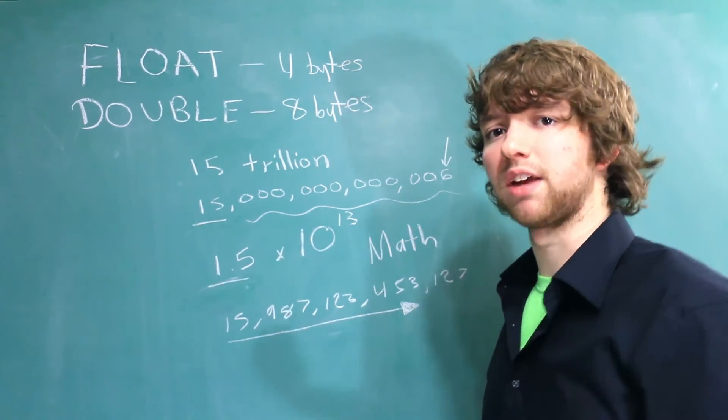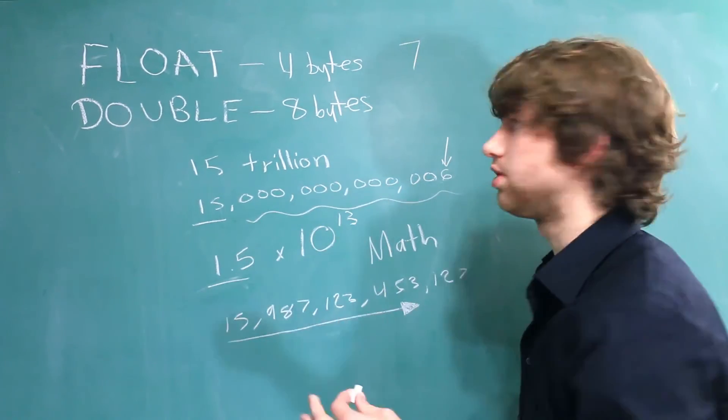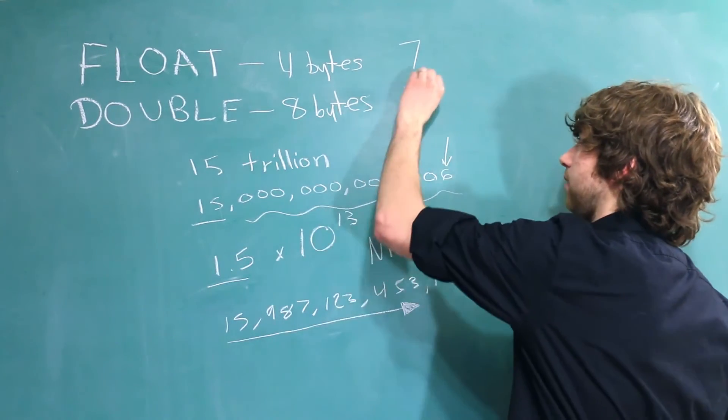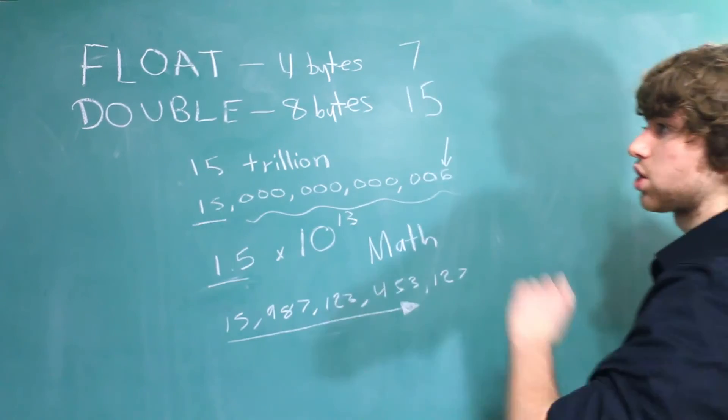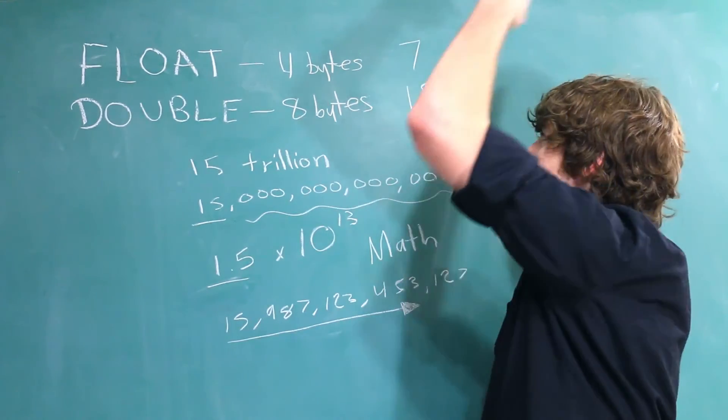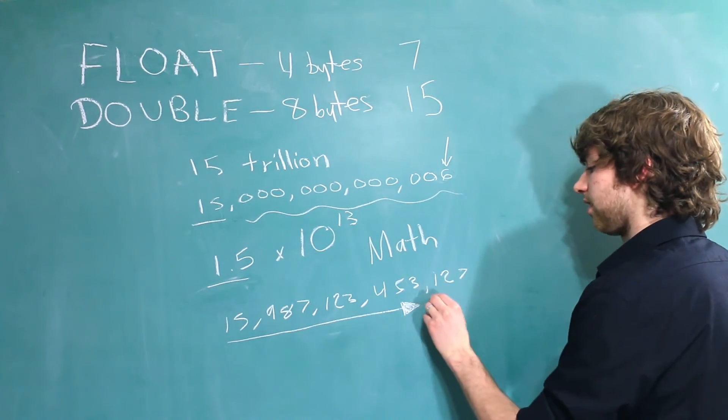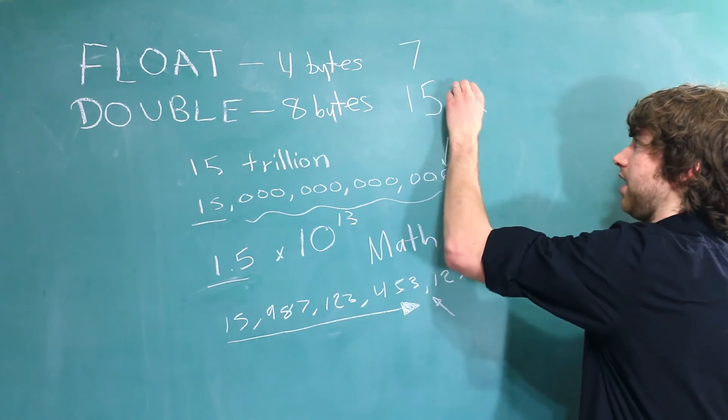So how much precision can you expect from these numbers? Well, a float you should be able to maintain around 7 digits, and then with double you can maintain around 15. The actual number you can store though is much stinkin' huger than 15 digits. So if we were trying to store something like this, we would be wise to pick the double data type.